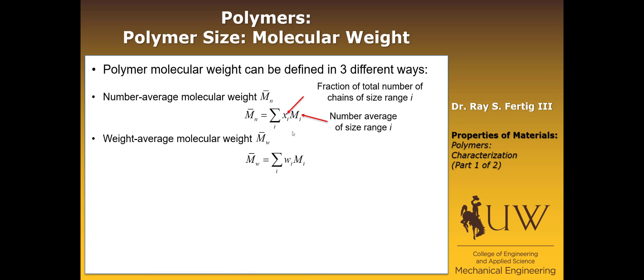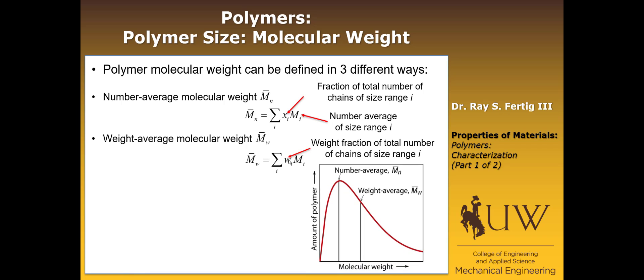Same thing for the weight average, except now we replace the number fraction with the weight fraction to get the weight average molecular weight. Looking at the distribution with molecular weight on the x-axis and the fraction of polymer, the number average gives you this peak value. The weight average molecular weight gives this value that's going to be higher. A third manner we can define molecular weight is the degree of polymerization, written as dp. It's the average number of repeat units in a chain. We can compute that by taking the number average molecular weight and dividing it by m, where m is the repeat unit molecular weight. That's how we define the size of a polymer and the ways we can define molecular weight.